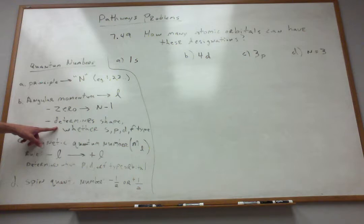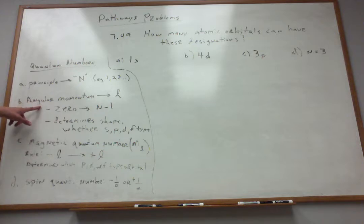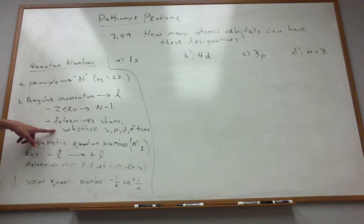So we're also learning about S-type orbitals, P-type orbitals, D, F, so on and so forth. This angular momentum quantum number tells you which orbital you got.